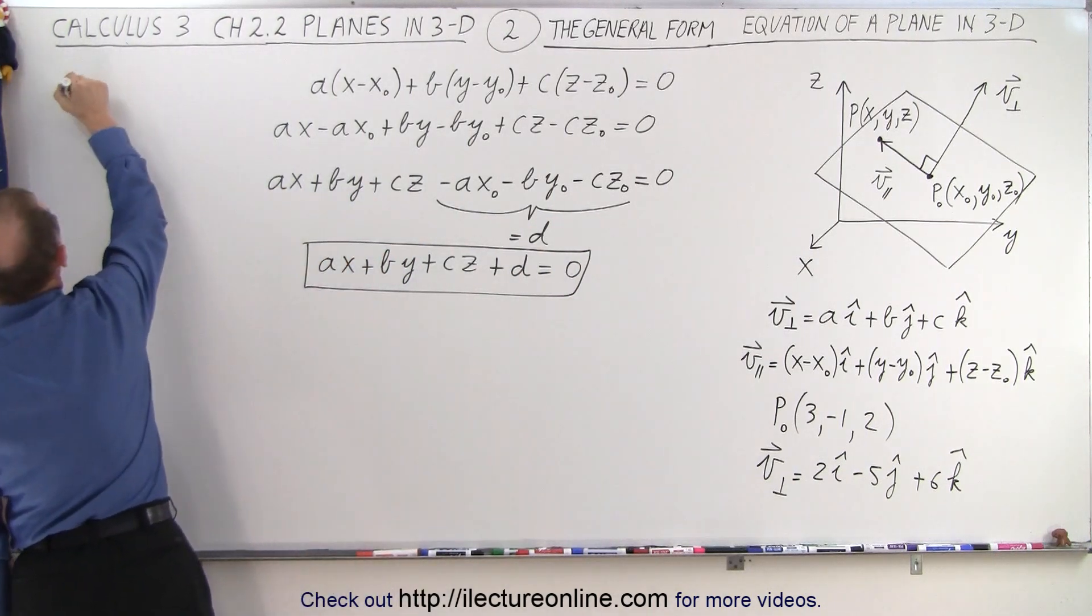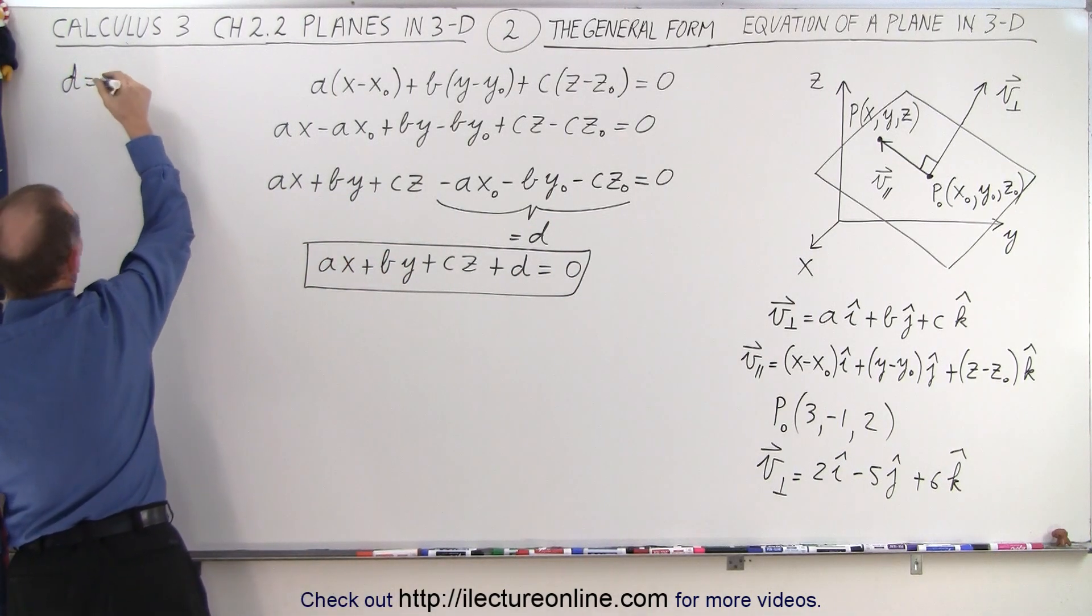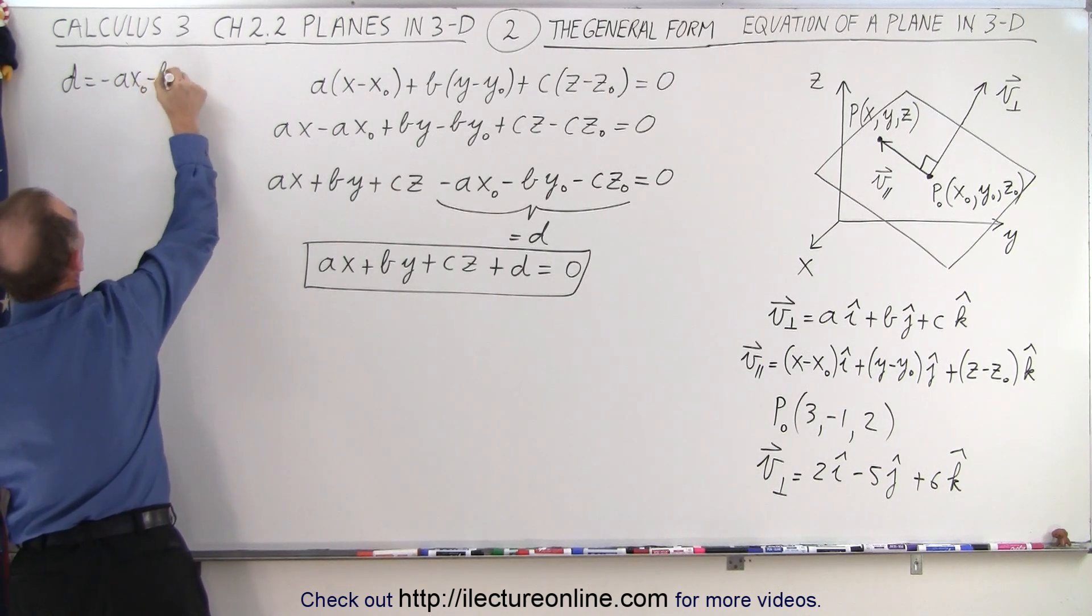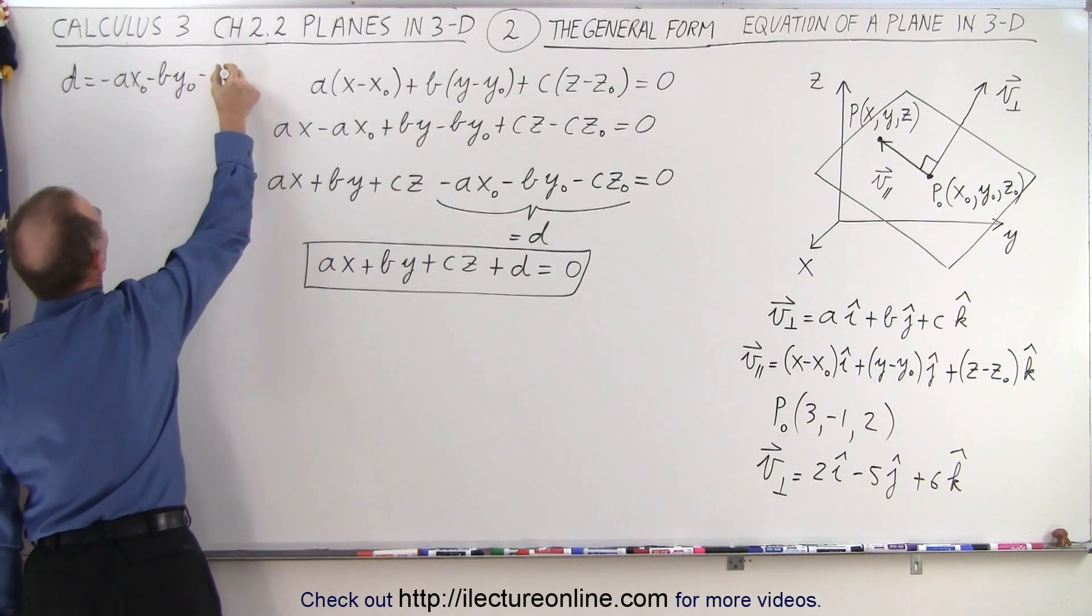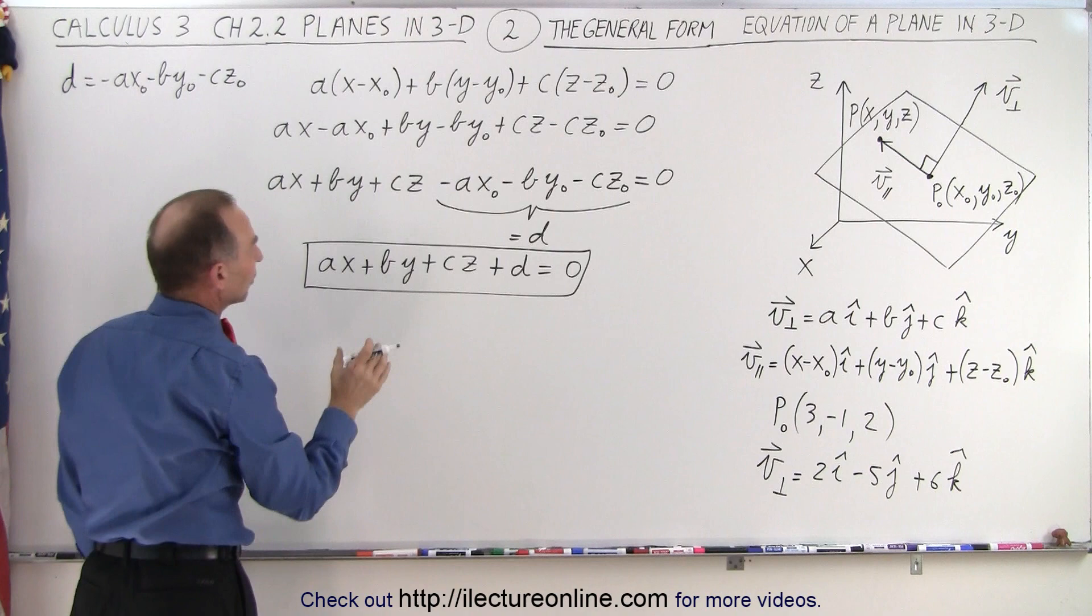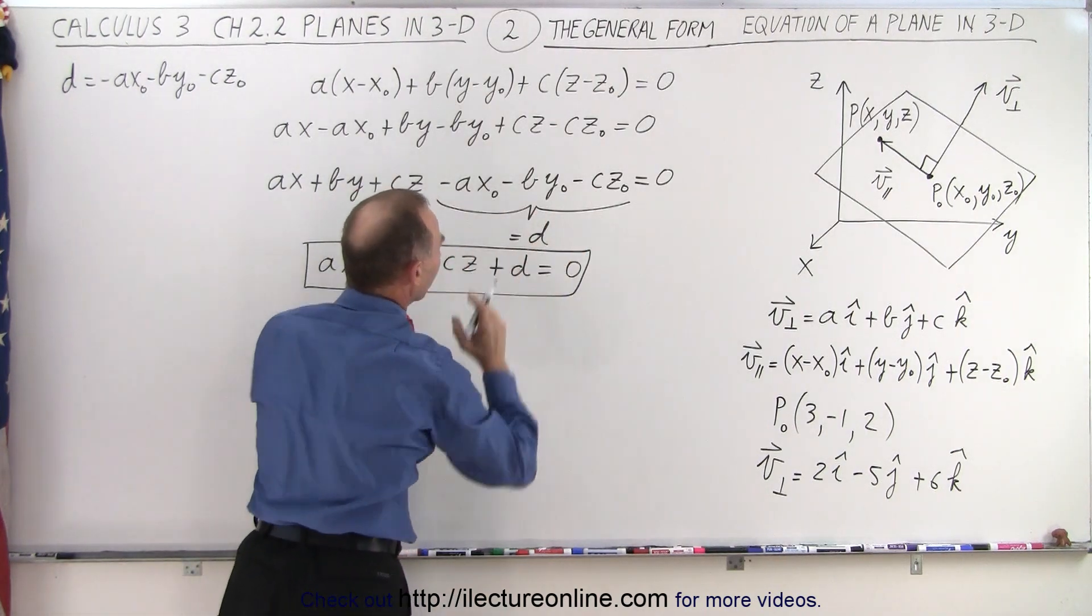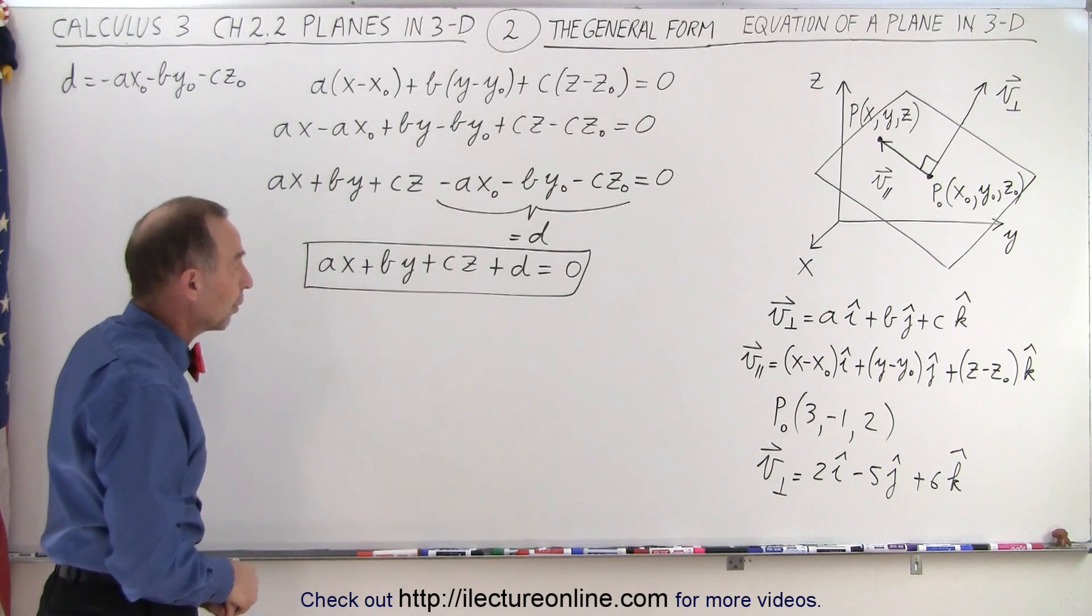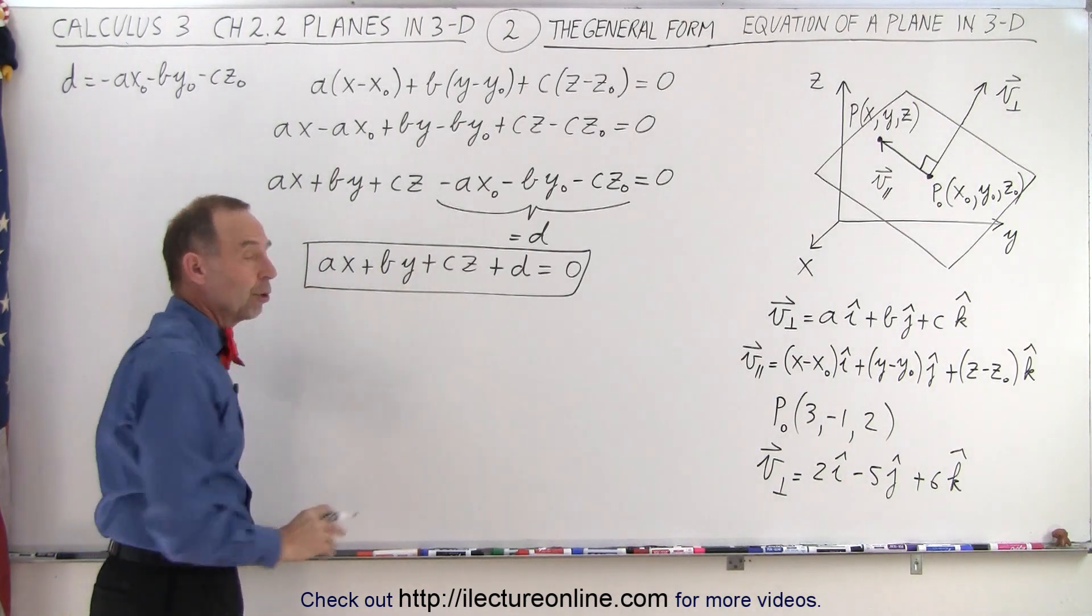In other words, D equals minus Ax sub-naught minus By sub-naught and minus Cz sub-naught. So we simply replace those three terms by D and call that the new form of the equation, or the general form of the equation. And that's a typical form used.